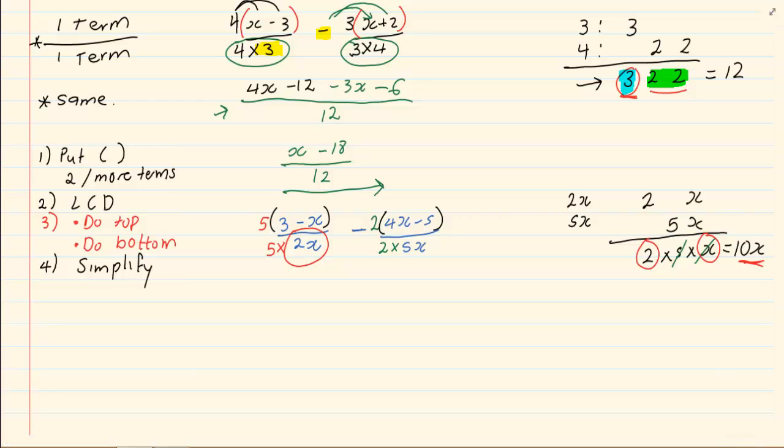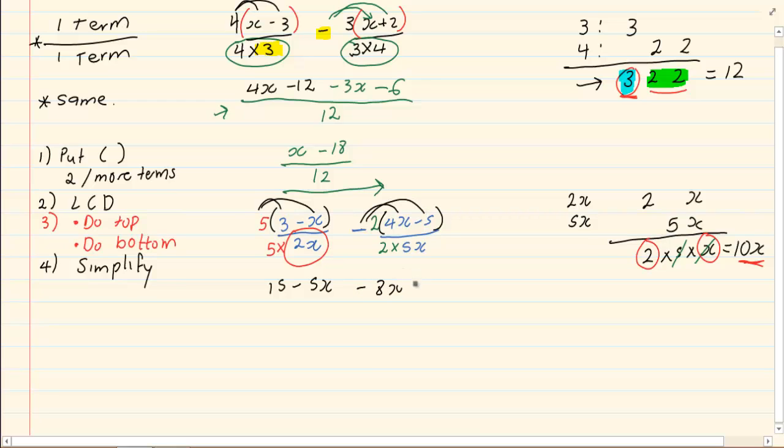Next, we simplify. 5 times 3 is 15 minus 5x, minus 2 times 4x is negative 8x positive 10, all over 10x.